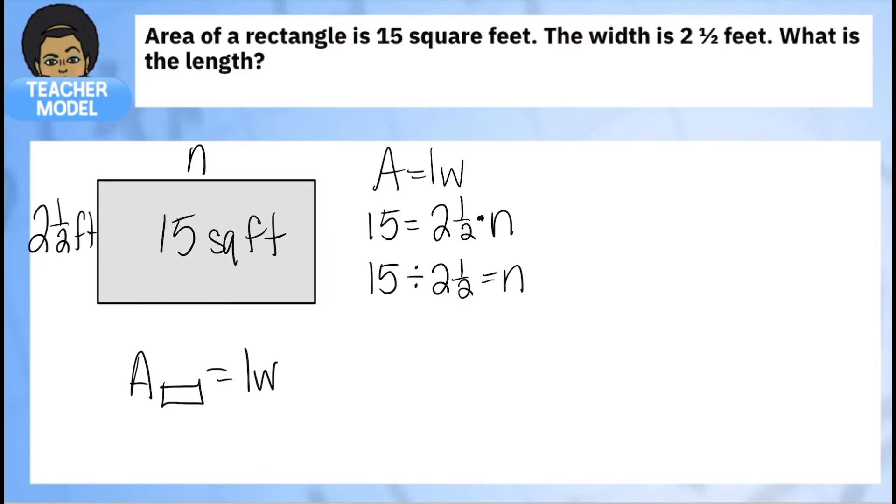This is something we know how to solve. We know how to divide with fractions. Turn both numbers into fractions: 15 over 1 divided by 5 over 2. And now use your algorithm to solve it: 15 over 1 times 2 fifths gives us 30 over 5, which can be simplified further to 6. That's our missing dimension. The length is 6 feet.